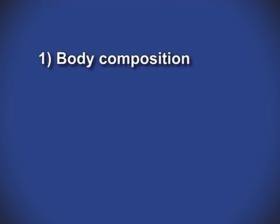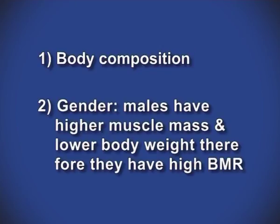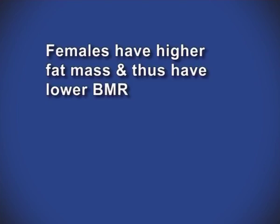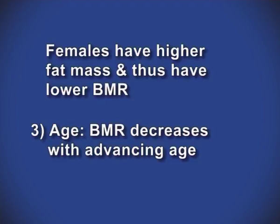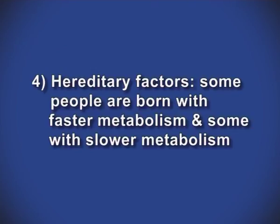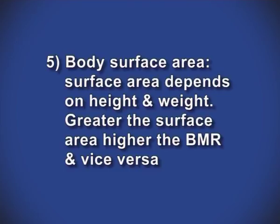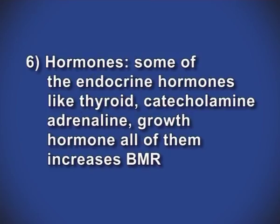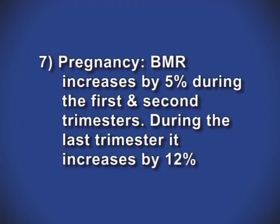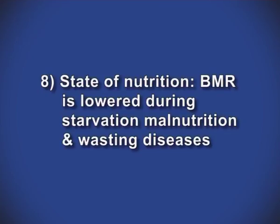Many factors affect BMR. Body composition and gender: males have higher muscle mass and lower body fat, therefore they have higher BMR; females have higher fat mass and thus lower BMR. BMR decreases with advancing age. Hereditary factors: some people are born with faster or slower metabolism. Body surface area: greater surface area means higher BMR. Hormones such as thyroid, catecholamine, adrenaline and growth hormone all increase BMR. During pregnancy, BMR increases by 5% in the first and second trimesters and by 12% in the last trimester. BMR is lowered during starvation, malnutrition and wasting diseases.